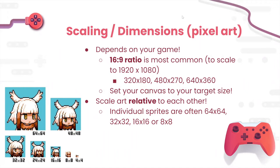1920 by 1080 is a 16:9 ratio, so anything drawn in that ratio can be scaled up and down to fill the entire screen. For pixel art specifically, you don't want a 64 by 64 character — you'd want to draw it on a smaller canvas so it shows up relatively large in the game. Some commonly used canvases for pixel art include 320 by 180, 480 by 270, and 640 by 360, depending on how pixelated you want it to look. We also want to scale art relative to each other: start with your character, make a canvas where the character shows up substantially, then draw the environment based on how big the character is.